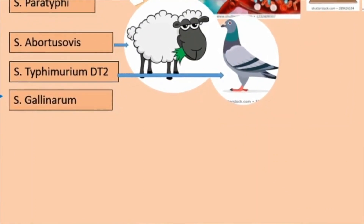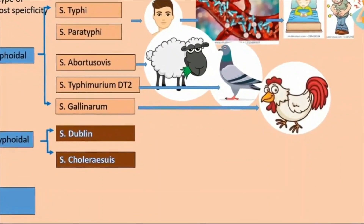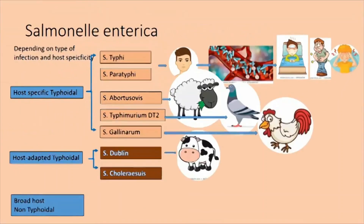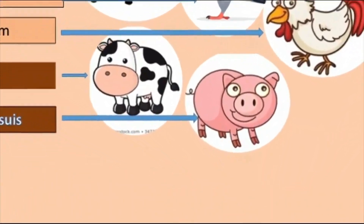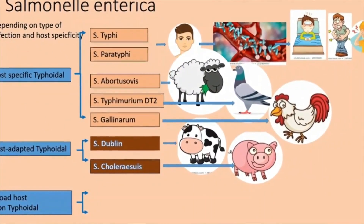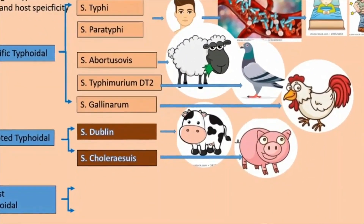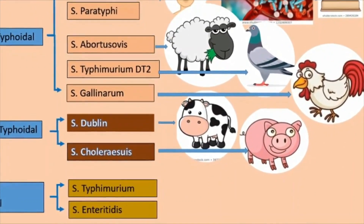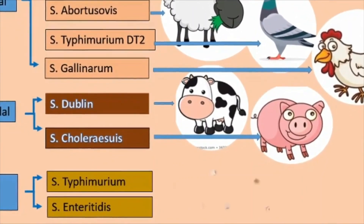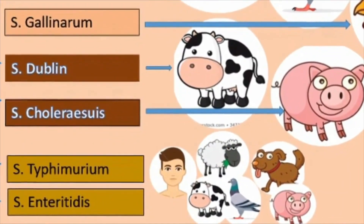The host-adapted typhoidal Salmonellas are Salmonella dublin and Salmonella choleraesuis. Salmonella dublin affects cattle; Salmonella choleraesuis affects pigs. The broad-host-spectrum non-typhoidal organism, Salmonella enterica subspecies enterica, affects almost all species. These Salmonella serovars — Salmonella typhimurium and Salmonella enteritidis — affect all species including cat, dog, pig, everything.